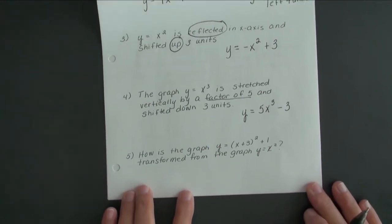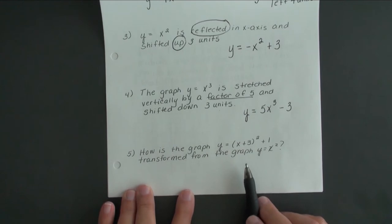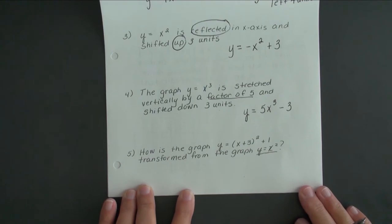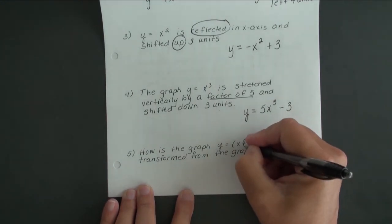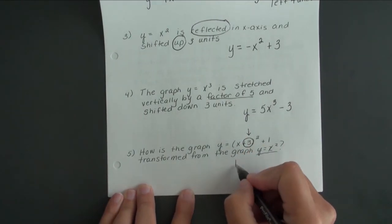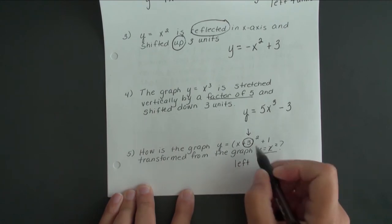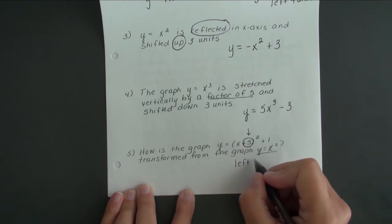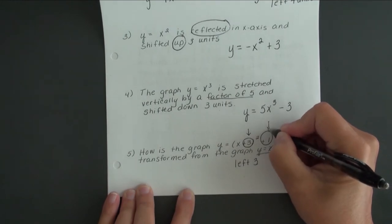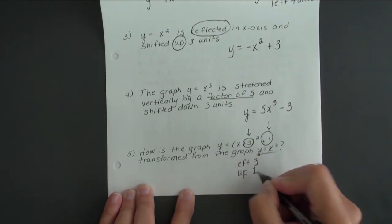In this next example, it's asking us to tell what the transformations were. We have y equals (x plus 3) squared plus 1. How is that transformed from the graph of y equals x squared? The plus 3 grouped with the x tells us we have a horizontal shift to the left—it's always kind of the opposite of what you see. If it's plus, it's to the left; if it's minus, it's to the right. So left 3, and then the plus 1 at the end tells us we're going up 1 unit.